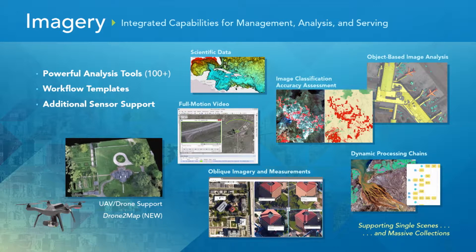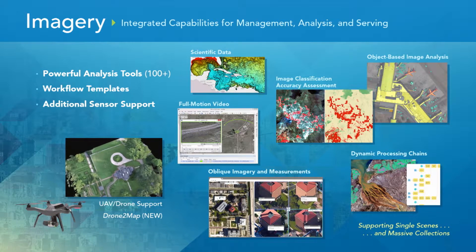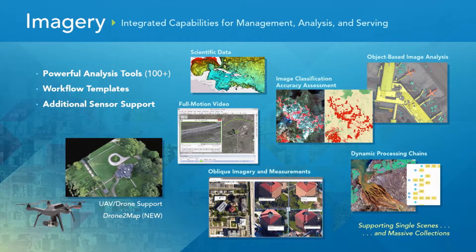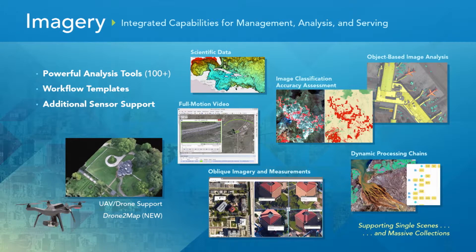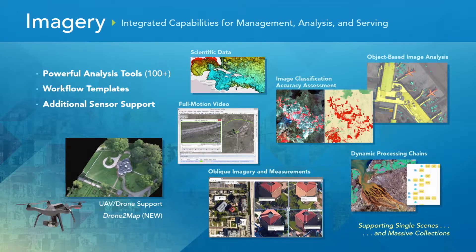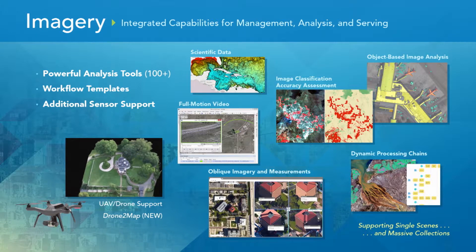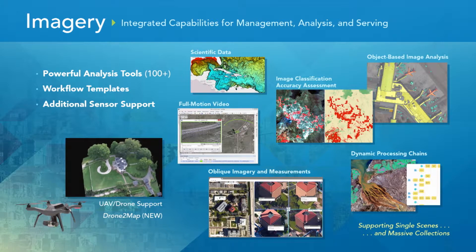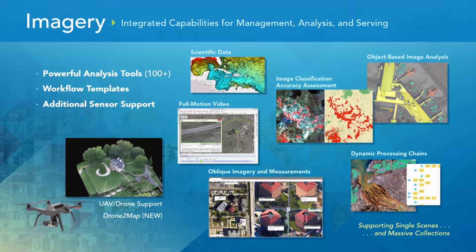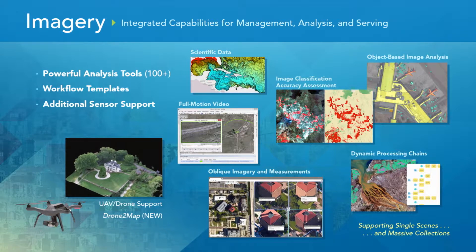Some of the specific improvements we've been doing on imagery are around scientific data — both the display and reading of those formats, but also the analysis: being able to do image classification and accuracy assessment. We've added integration of full motion video with georectified full motion video, so you can actually do digitizing on the video. We also have dynamic processing chains within imagery, so you no longer have to create new data for all your image analysis — that data can be created on the fly every time somebody asks for that image, and you can adjust the analysis parameters.